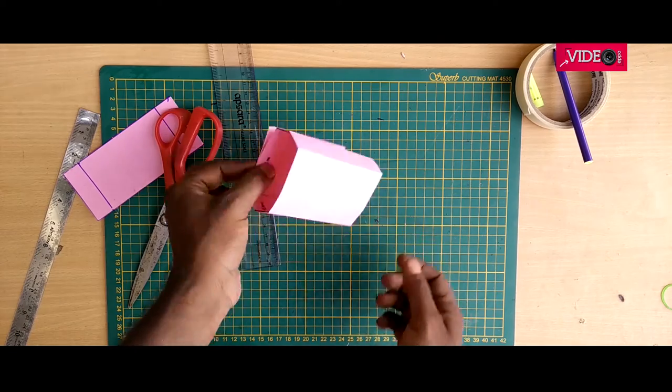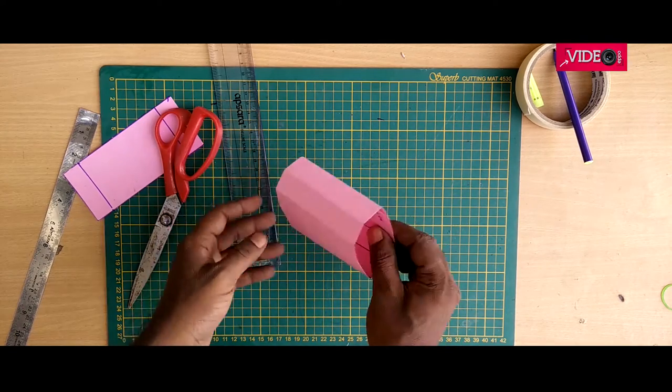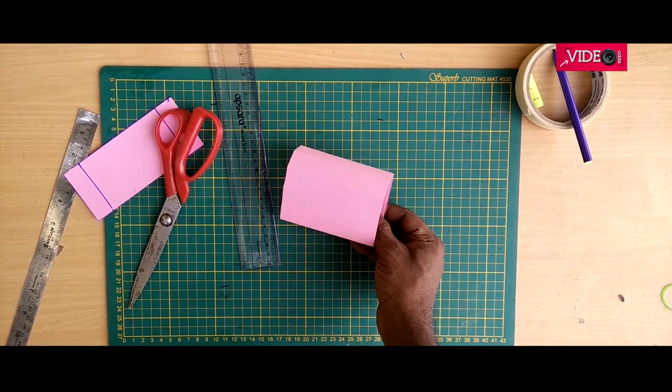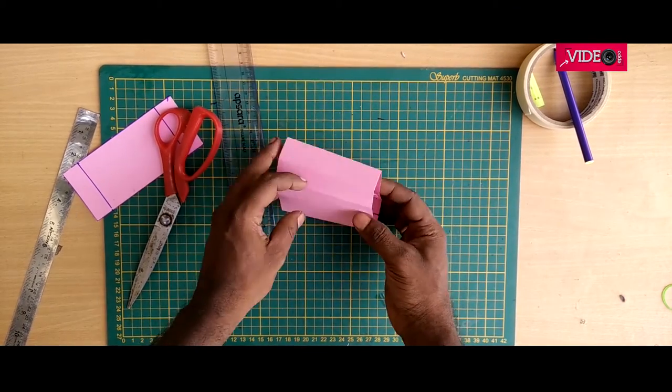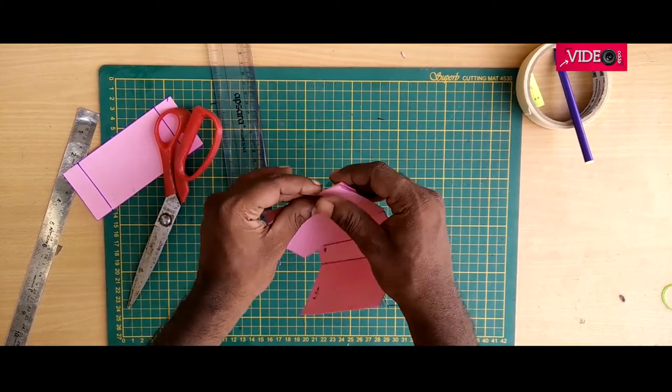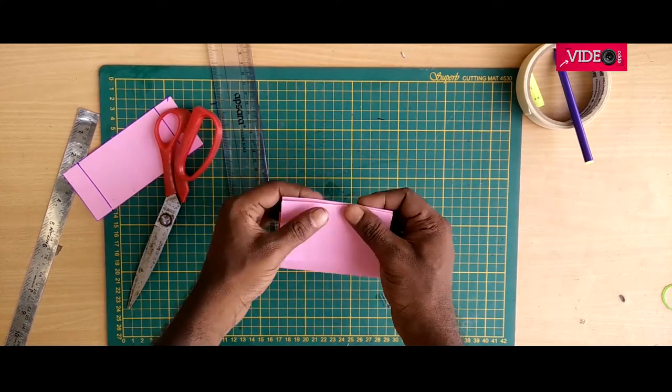You could use a tape to stick it here but it's not necessary as the folds will hold them firm later. Fold the 4 centimeter mark on the inside and it should look like this.